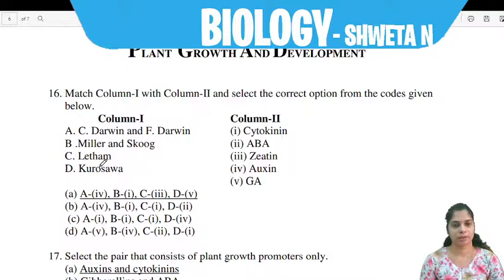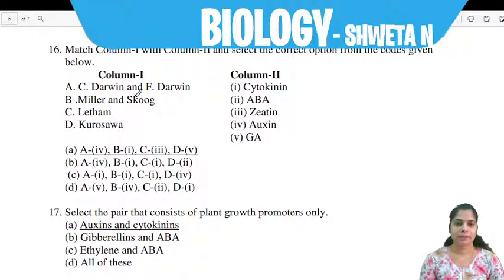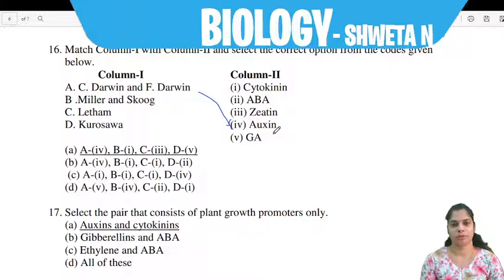Next question from plant growth hormones: Match column 1 (scientists' names) with column 2 (hormone names) and select the correct option. A is Charles Darwin and F. Darwin — they both worked on and discovered auxin, which is a plant growth hormone.